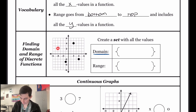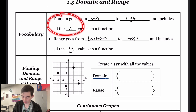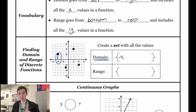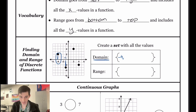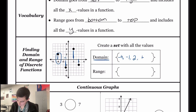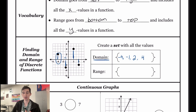So for domain, we need to find the x value of all of our points since domain is all of our x values. Going just left to right, my first point is at negative four, my next point moving to the right would be negative one. Continuing to move right, I've got another point at two, and then my rightmost point is at four. So that would just be the domain — we're just taking a list of all the x values going from left to right.